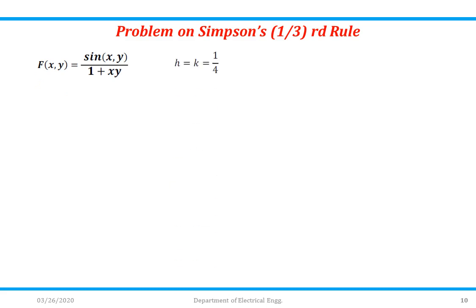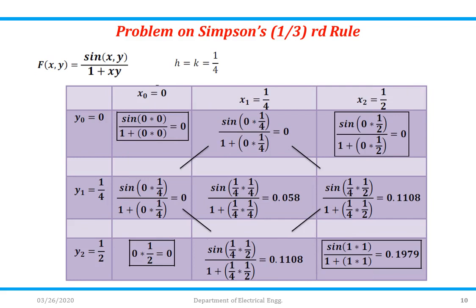For the next problem, the function f(x,y) is given and h = k = 1/4. The table: x0 starts from 0 and ends at 1/2, so x0 = 0, x1 = 0 + 1/4 = 1/4, x2 = 1/4 + 1/4 = 1/2. Similarly y0 = 0, y1 = 0 + 1/4 = 1/4, y2 = 1/4 + 1/4 = 1/2. When x = x0 = 0 and y = y0 = 0, the function gives 0/(1+0) = 0. Put corresponding values to complete the full table.